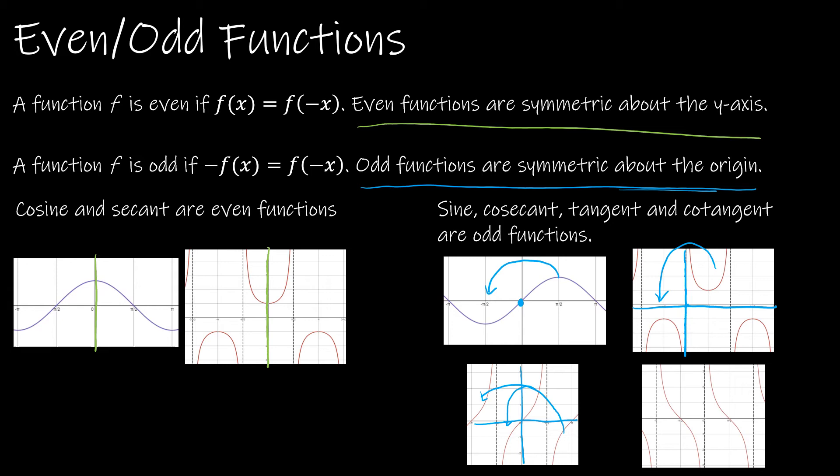So cosine and secant are even functions. And all of the rest are odd functions.